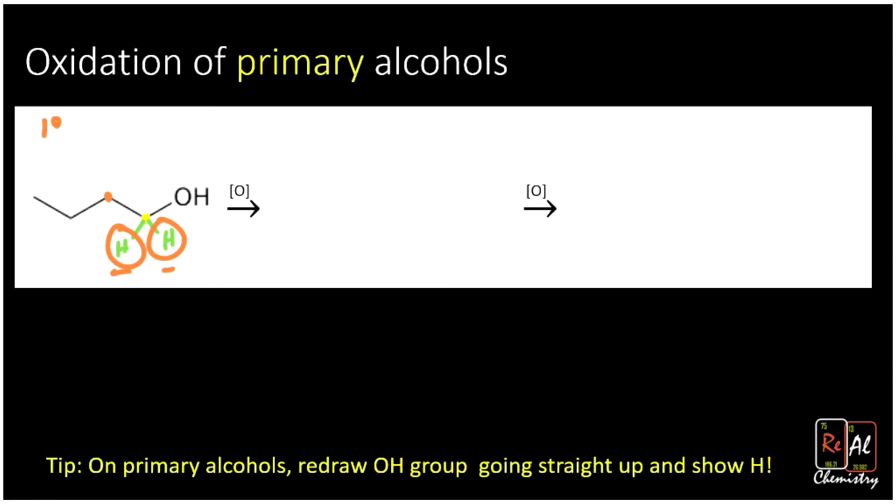Primary alcohols are the most challenging ones to predict. And then each step gets easier. When we go to secondary, that's easier. And tertiary is easier still. In fact, tertiary has no possible oxidation, makes it really simple. So this one's going to look a little scary. And then the secondary and tertiary will look much nicer.